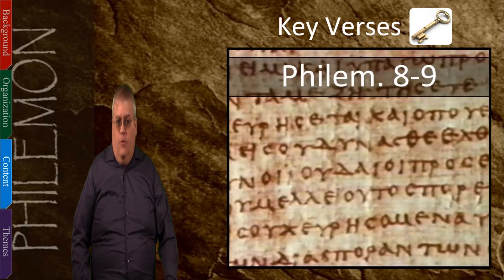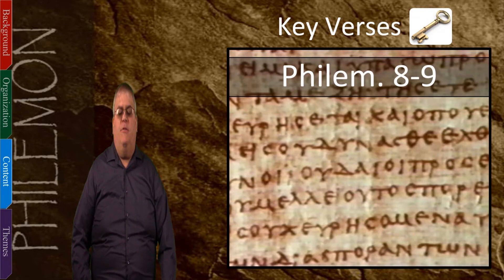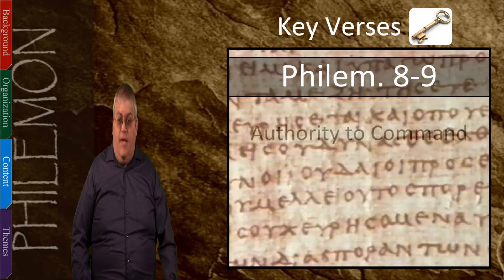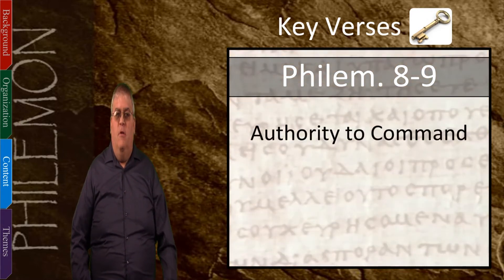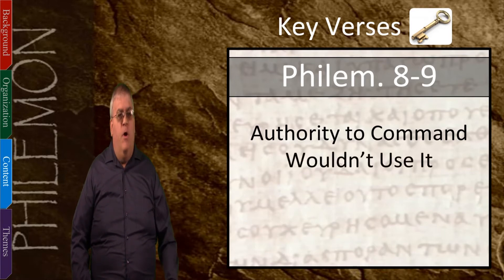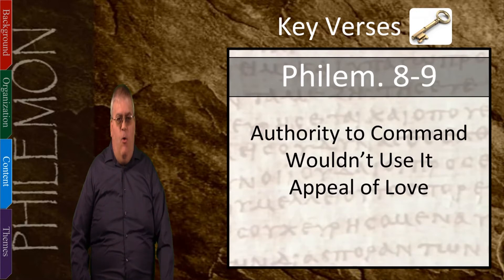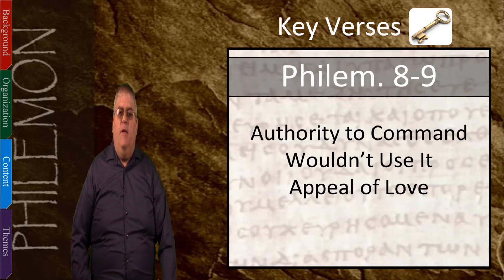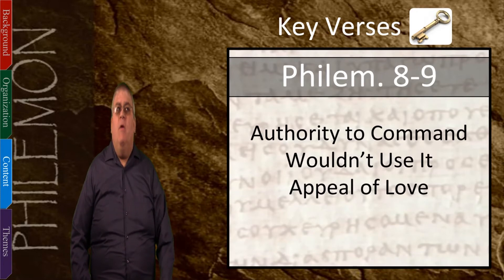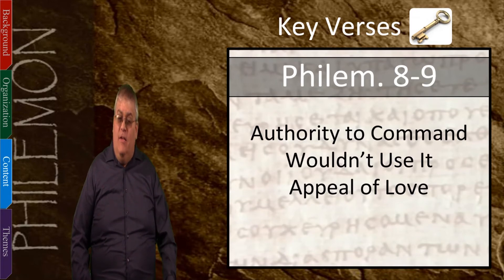Now let's look at a few key verses. First, verses 8 and 9: 'Therefore, although in Christ I could be bold and order you to do what you ought to do, yet I appeal to you on the basis of love.' In this passage, Paul insisted that he had authority to command, both as an apostle and as one responsible for Philemon's conversion, but he didn't want to use that authority. Instead, he wanted to appeal on the basis of love. Sometimes it's right to tell people what to do because it's the right thing to do, and we shouldn't shy away when we have the proper moral authority. But motivating people by love is even better — when they love the one asking, and better still when they have come to love what they are asked to do because they've been shown it is good and right.